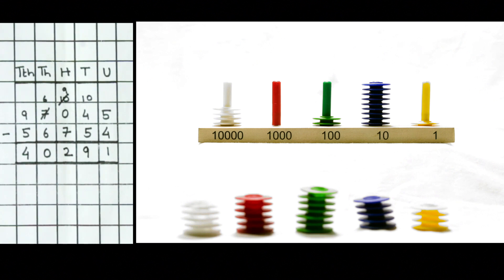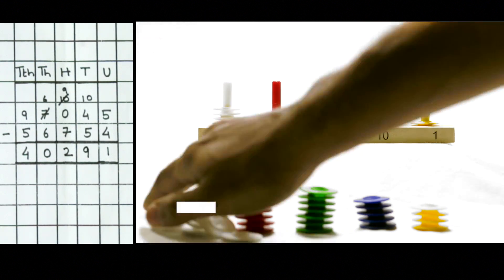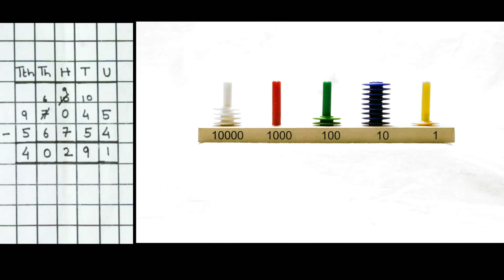Verify against the subtrahend fifty six thousand seven hundred and fifty four that all rings have been correctly subtracted and move them away. Count the rings left on the abacus. It is forty thousand two hundred and ninety one. This is the difference between the two numbers.